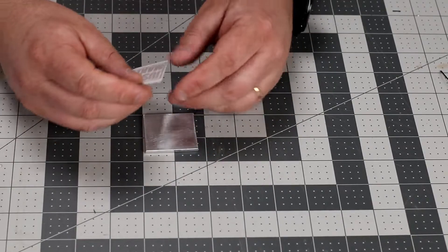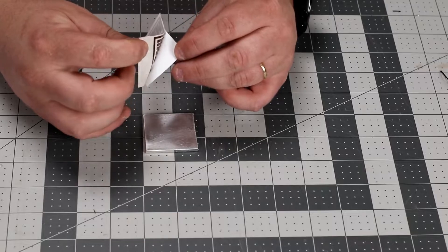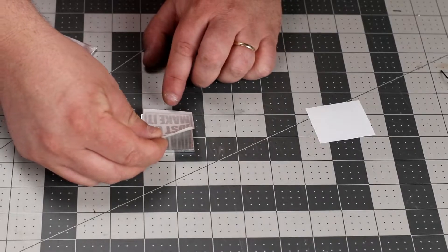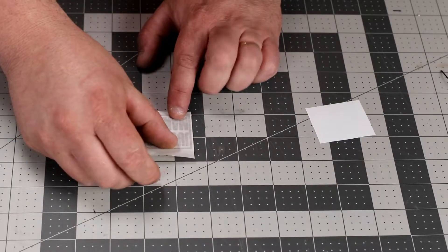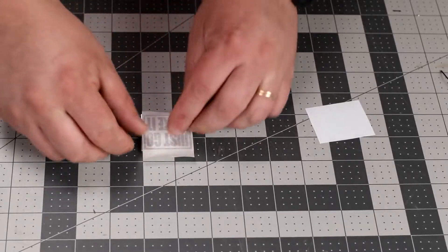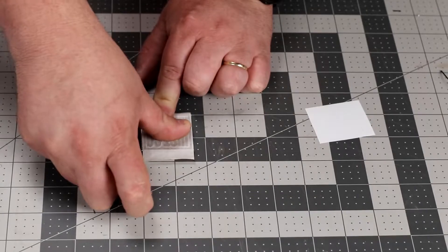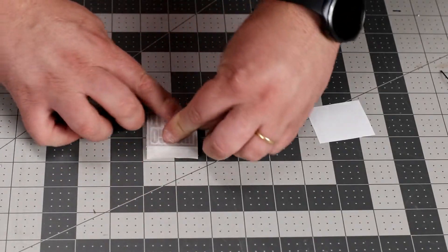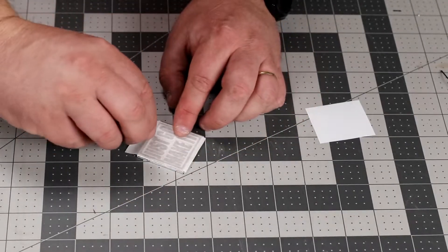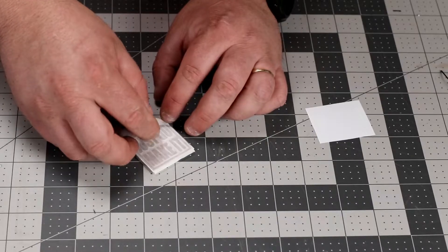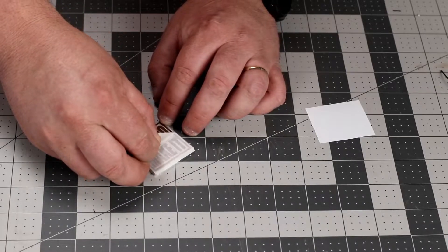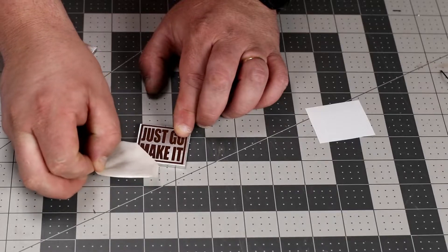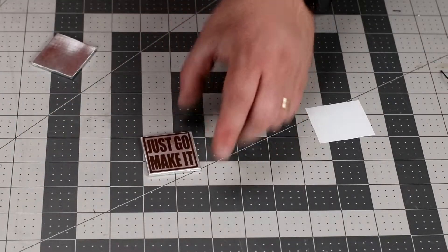Let's try this again. I have some here with a weaker transfer tape. Let's stick it on there, rub it down real good, peel it off and see what happens. Oh yeah, now that's what I'm talking about.